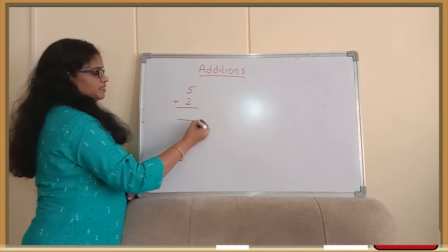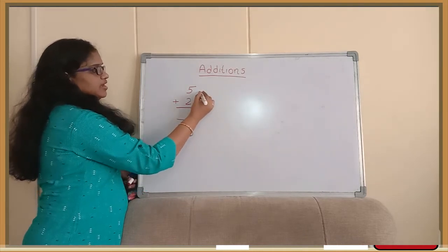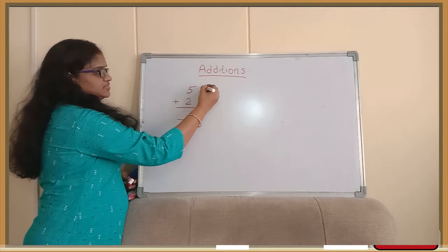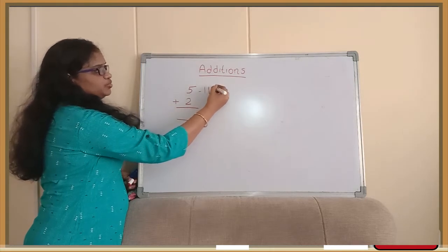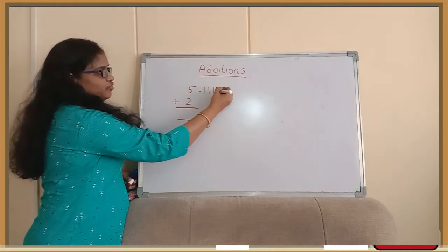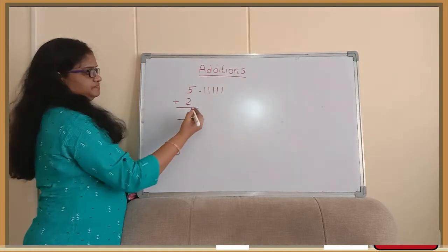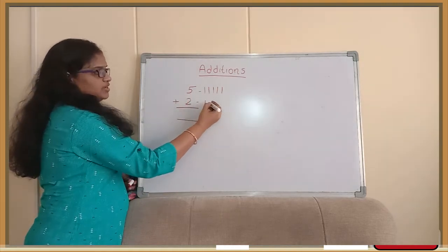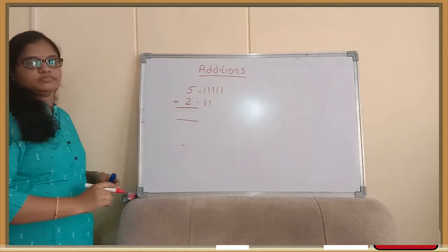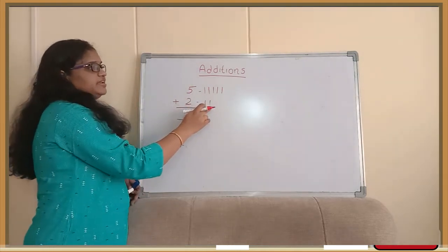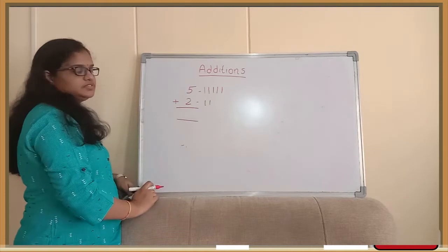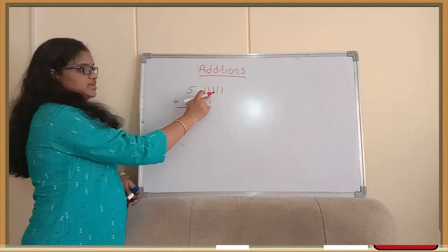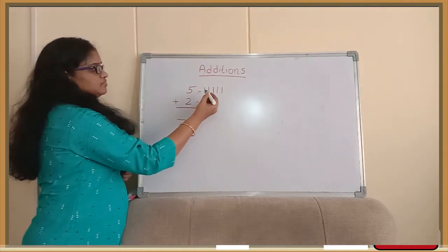So here I am taking 5 means 5 lines. 1, 2, 3, 4 and 5. Here we are having 2. So 1 and 2. 2 lines are there. Here 5 lines are there. So we should join these lines and these lines.